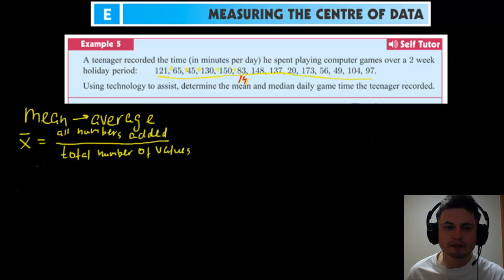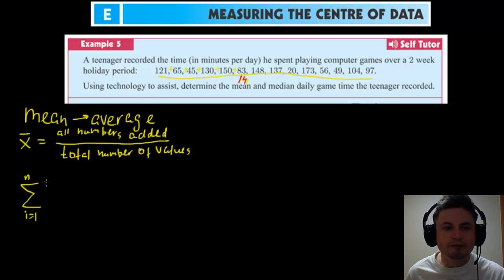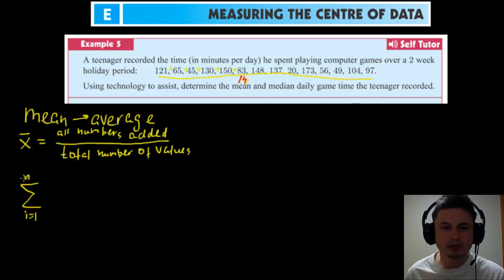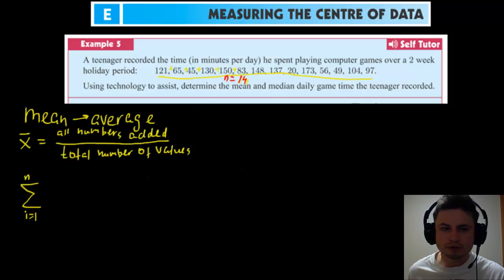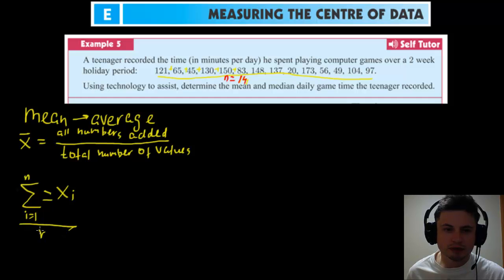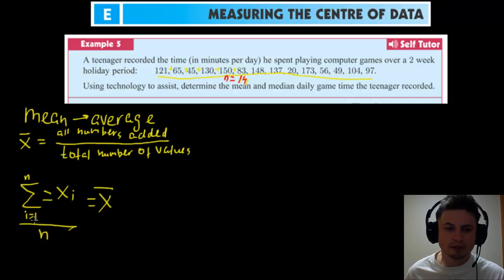I'm also going to rewrite this in mathematical terms because you'll see the symbol a lot, especially on a test. The symbol I'm talking about is the Greek sigma, which refers to the sum. So x-bar equals the sum of x_i (starting with i equals one) divided by n, where n is 14 in our example. The sigma refers to the sum of all n numbers.